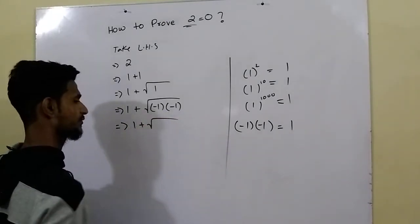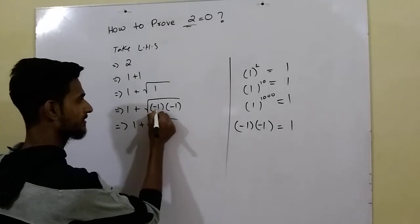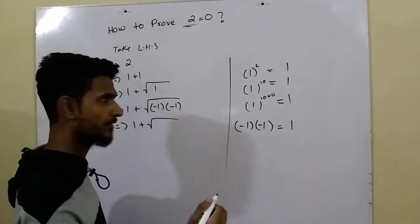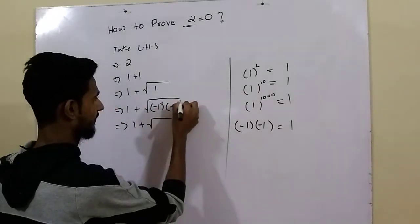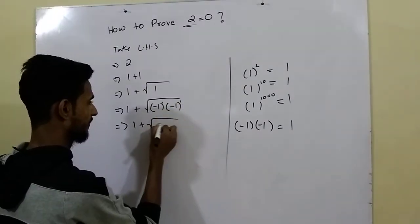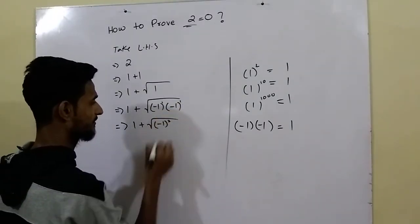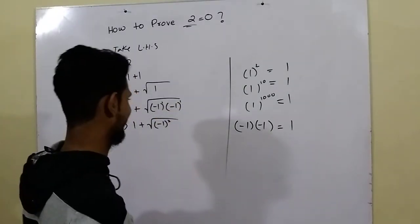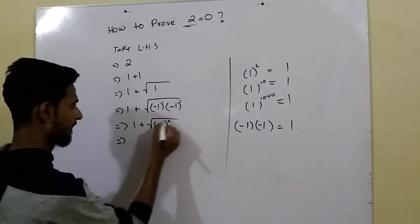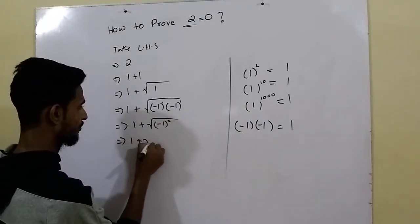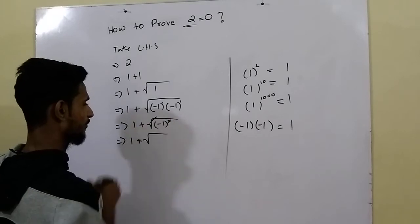And over here, minus 1 multiplied by minus 1. Whenever the bases are same, the powers are added. Here the power is 1, here the power is 1. So what it will become? It will become 2 or like a square root, a square. And what we do with the square and square root, we cancel them.